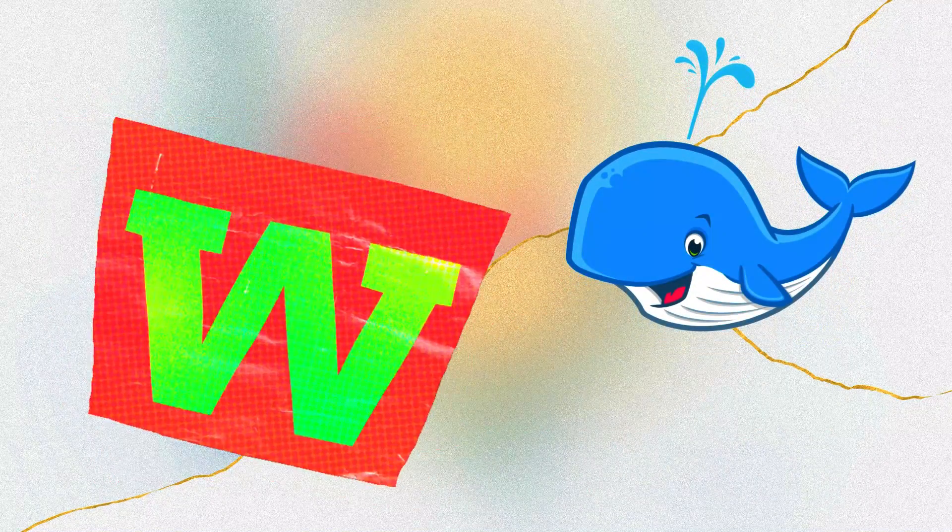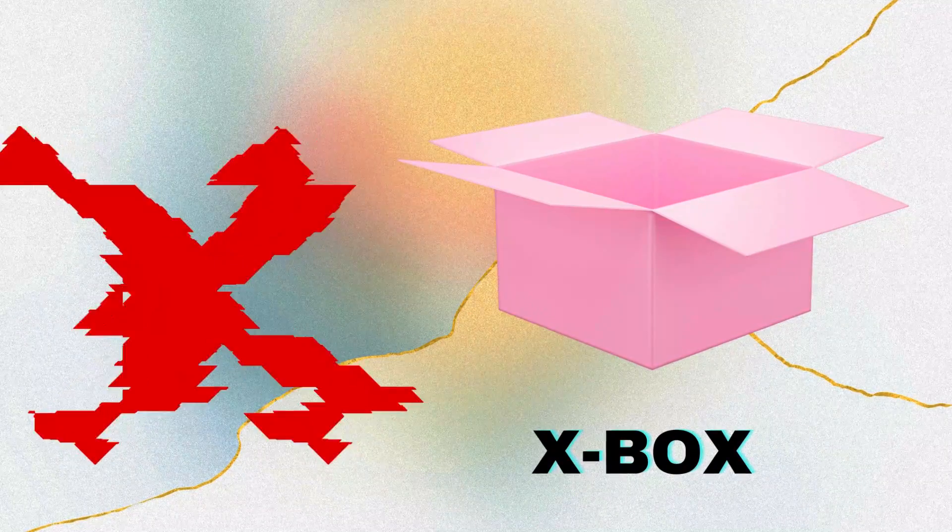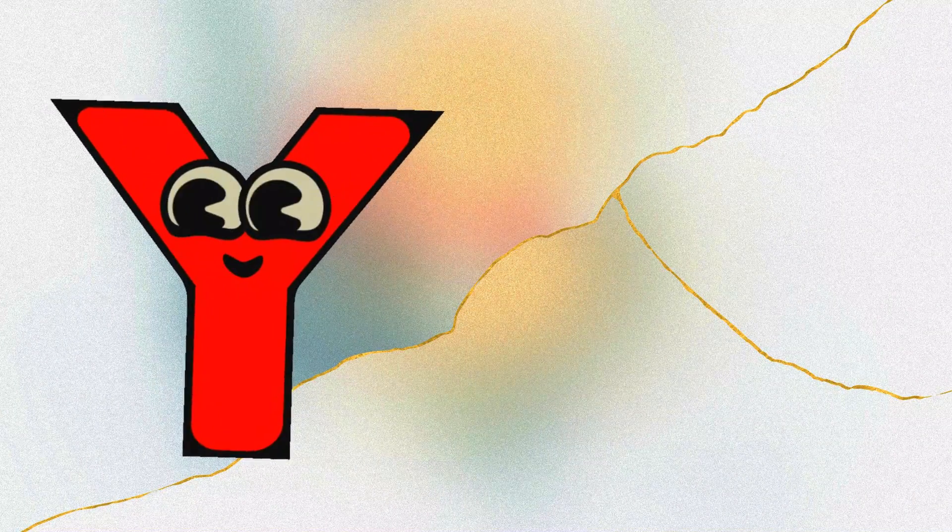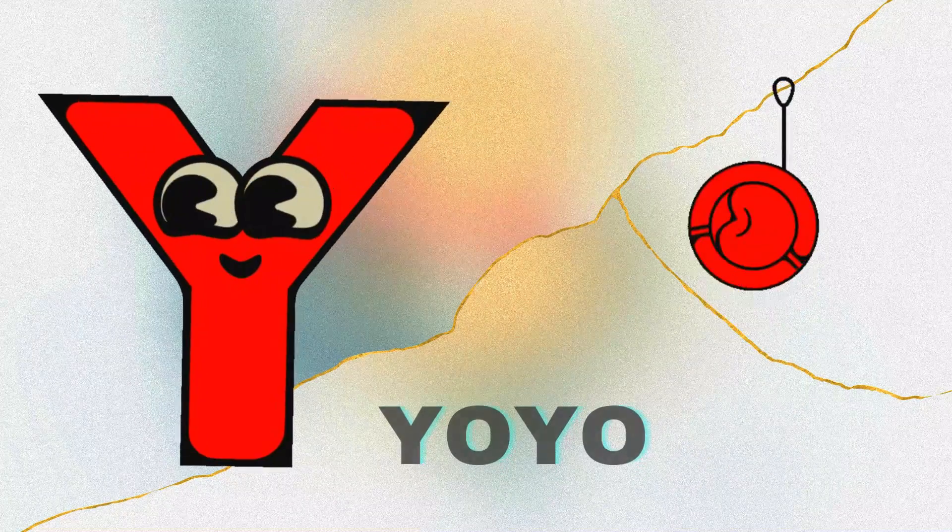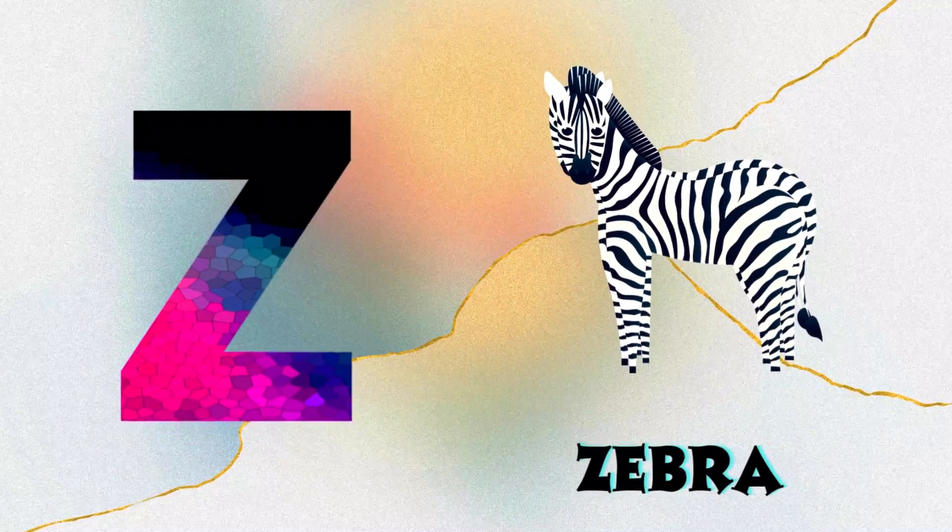W is for w-w-wagon. X is for x-x-box. Y is for yo-yo, y-y-yo-yo. Z is for zebra, z-z-zebra.